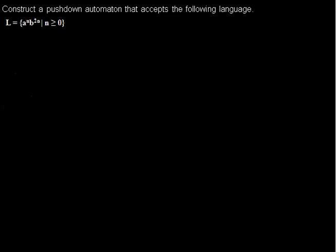We want to construct a pushdown automaton that accepts the following language. There are many possibilities for a pushdown automaton that accepts the same language, so I only show you one possibility in this video. First, let's look at the language so we are sure about what the automaton shall accept. You have any amount of a's in the word, and whatever the amount of a is, you have double the amount of b's following them. The minimal number of a's is zero, and b's too, so you can have the empty string in the language.